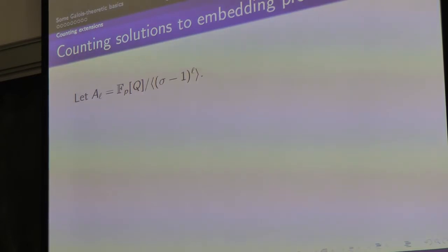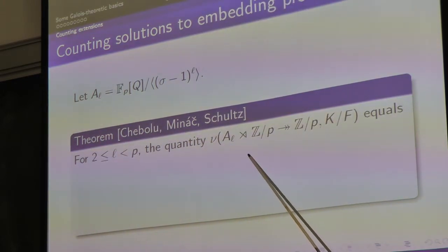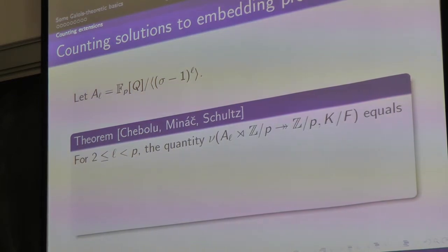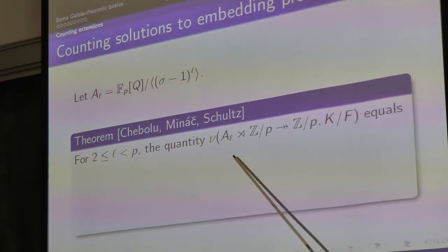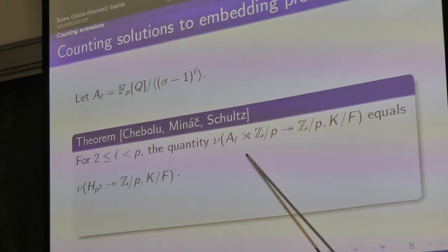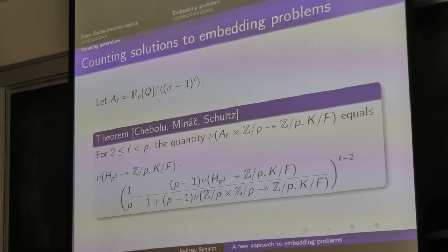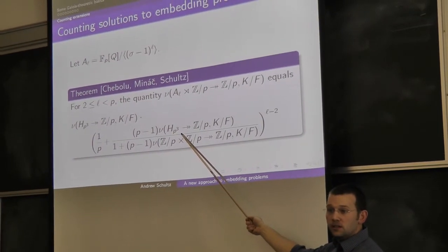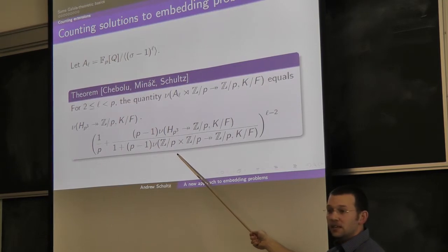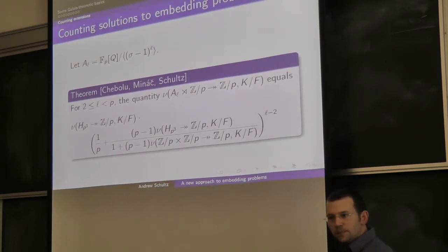How about counting solutions to embedding problems? Recall that A sub L is the cyclic FpQ module of dimension L that's indecomposable. You can precisely count the number of split extensions corresponding to that module. The way to do it: first count the number of solutions to the HP-cubed embedding problem, then multiply by a certain factor involving the number of extensions that look like Zp cross Zp. Plug those two numbers into the formula, and you can count exactly the number of solutions to this particular embedding problem.